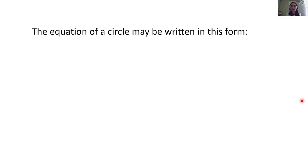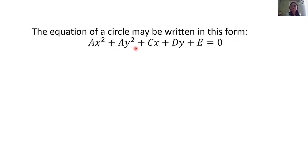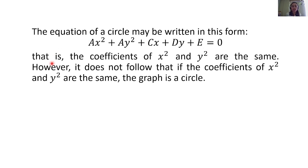The equation of a circle may be written in this form: Ax squared plus Ay squared plus Cx plus Dy plus E is equal to 0. That is, the coefficients of x squared and y squared are the same. However, it does not follow that if the coefficients of x squared and y squared are the same, the graph is a circle.